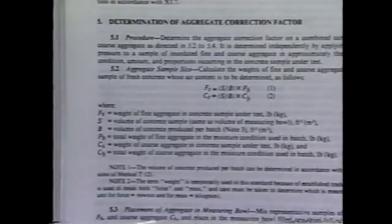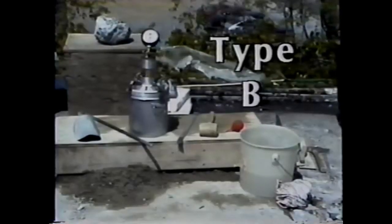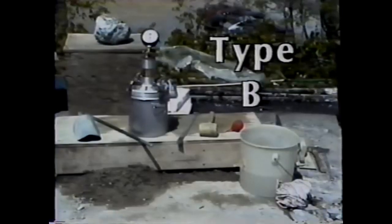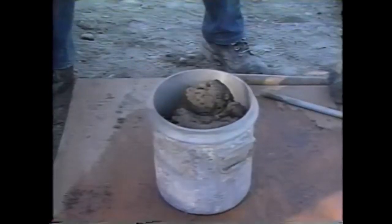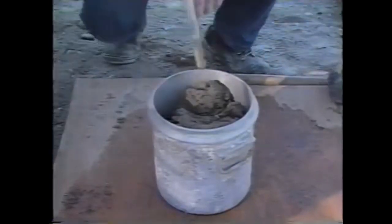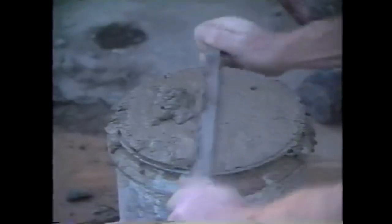Determination of the aggregate correction factor using both meters is covered in T152. The Type B test requires a calibrated Type B meter, as well as the same equipment needed for the Type A test. The first step is to fill the bowl with concrete, consolidate it, and strike it off, the same as for Type A.